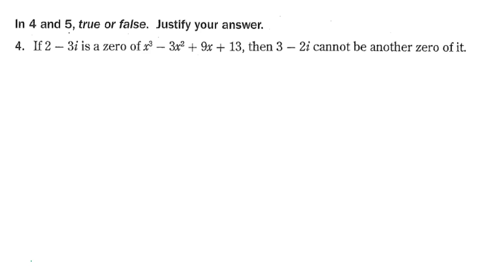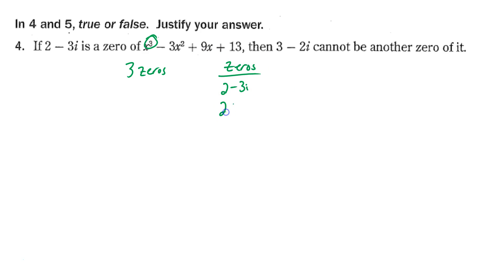True or false: 2-3i is a zero of x³ - 3x² + 9x + 13. The fundamental theorem of algebra tells us that since this is a cubic there are three zeros counting multiplicities. They tell us 2-3i is one zero; since the polynomial has real coefficients, the conjugate roots theorem applies, so 2+3i must also be a zero. That gives us two zeros already, leaving only one more.